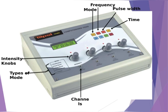This is a 4-channel TENS machine. These are the 4 intensity knobs. These channels are connected with leads and electrodes which are further placed on the patient. This is the mode button to change the mode like low, high, brief, burst and modulated TENS. This is the frequency button used to vary the frequency according to the mode. This is the pulse width button. And this is the time button.